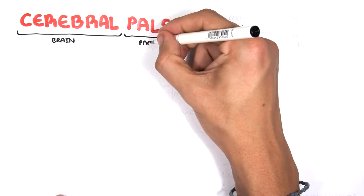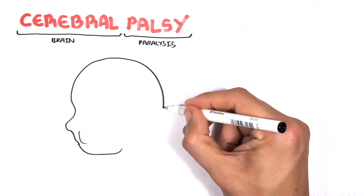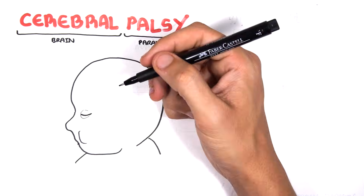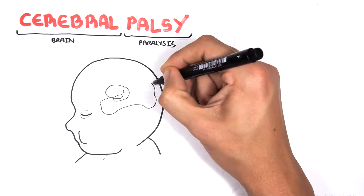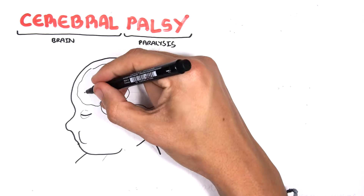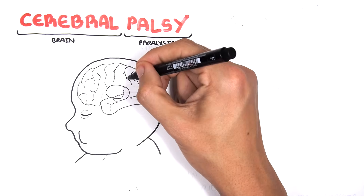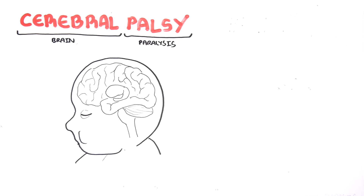In this video we're going to talk about cerebral palsy — cerebral pertaining to the brain and palsy as in paralysis. Cerebral palsy is an umbrella term that refers to a group of disorders affecting a person's ability to move. It is due to damage to the developing brain either during the pregnancy or shortly after birth.